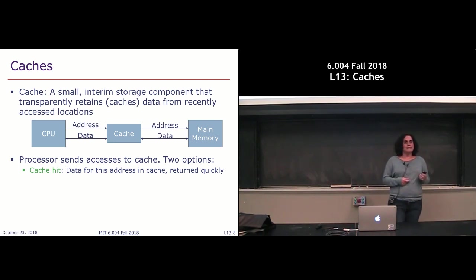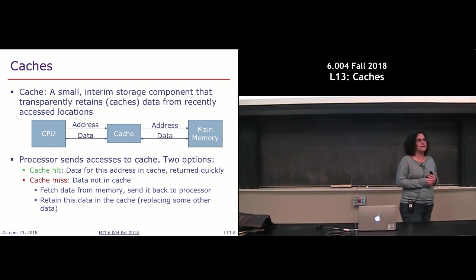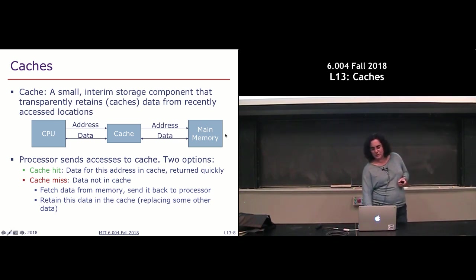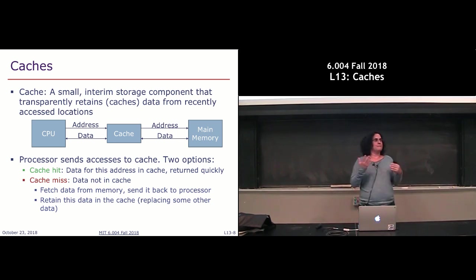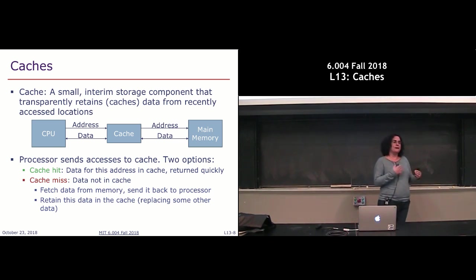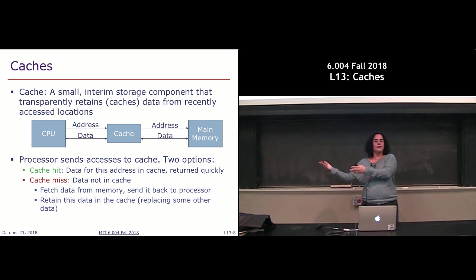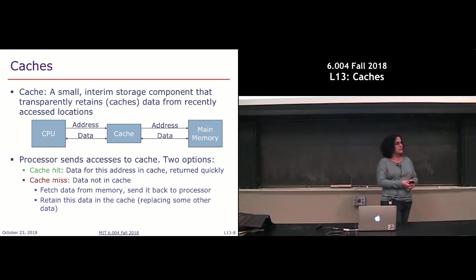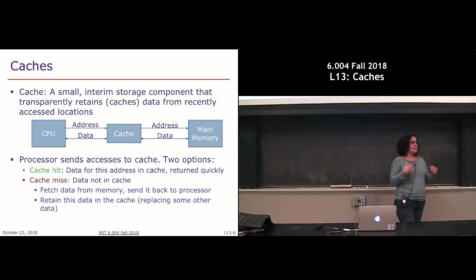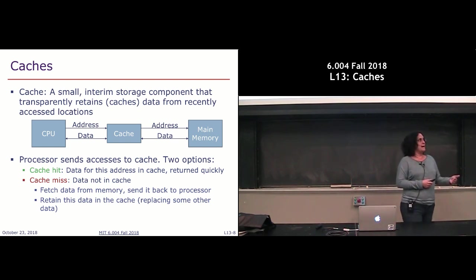If the data's not in the cache, we get a cache miss. On a cache miss, we go to main memory, which takes longer. But when we go to main memory to fetch something we didn't have in cache, we not only return it to the CPU but also insert it into our cache. That way we take advantage of locality — if I'm accessing something I'm likely to want it again, so while I got a cache miss the first time, next time I access it I'll hopefully get a cache hit because it's already been brought into my cache.